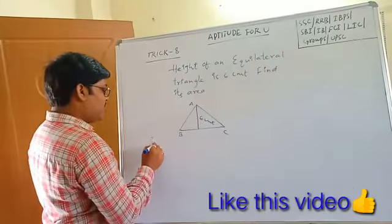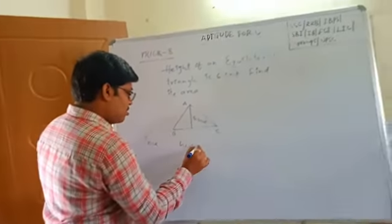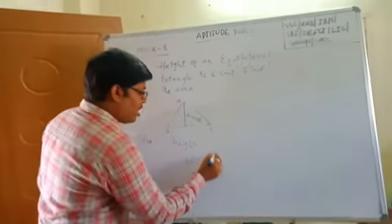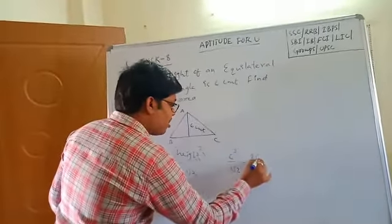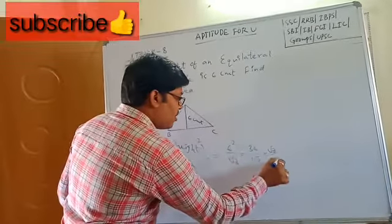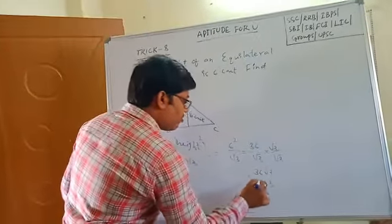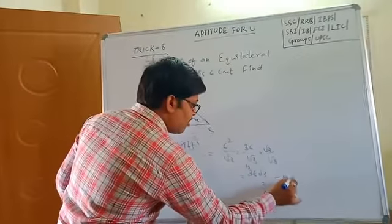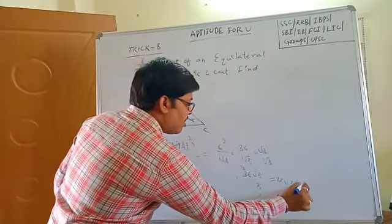Now we check the short trick: height squared by root 3. Height is 6, so 6 squared by root 3 equals 36 by root 3. Rationalizing: 36 root 3 by 3 equals 12 root 3. So the answer is 12 root 3 cm squared. This short trick gives the same answer quickly.